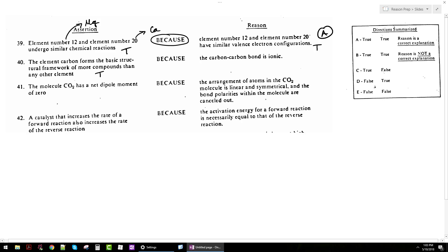The second statement says carbon-carbon bond is ionic. Well that's false, because they're both nonmetals, so that bond is covalent. So we get true-false, which for number 40 is C.